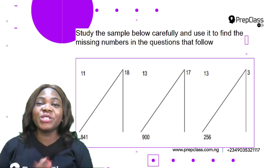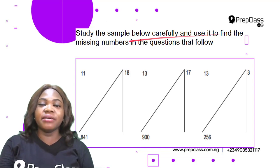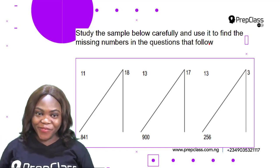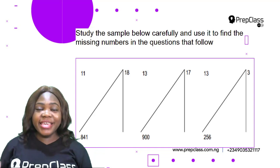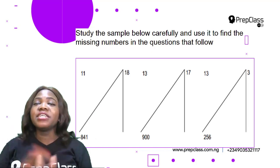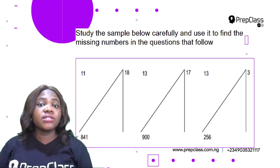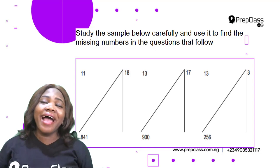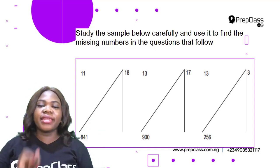We have a set of samples to study. Study the sample below carefully and use it to find the missing numbers in the questions that follow. Quantitative reasoning is a measure of a person's ability to use mathematical skills to solve problems, so you have to study the samples, find out the math relationship behind them, and use it to answer the questions.